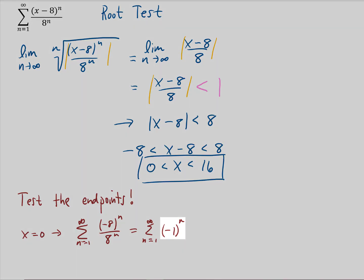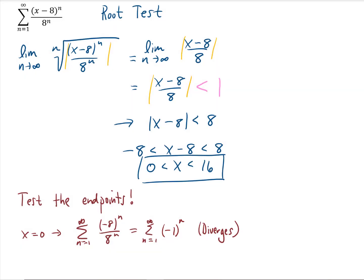This is an alternating series. However, this term inside of the series does not go to 0 as n goes to infinity. So this thing diverges. Therefore when x equals 0, our sum does not converge. Therefore we are not going to add x equals 0 to our interval of convergence.